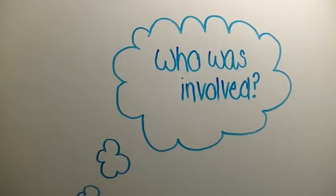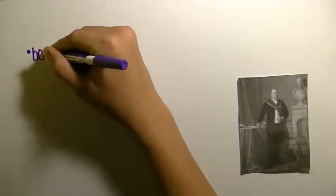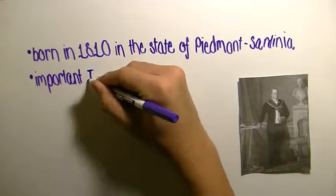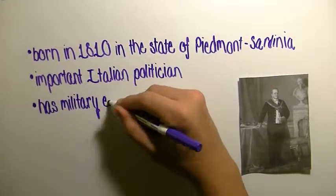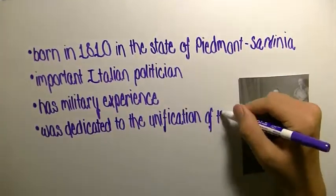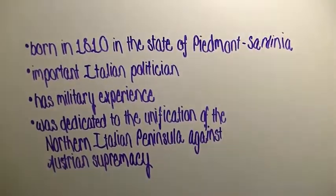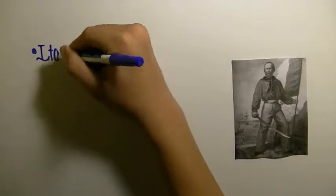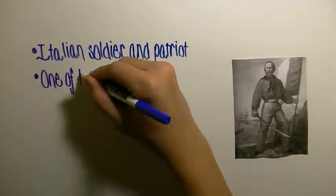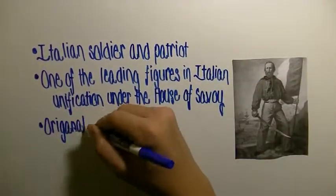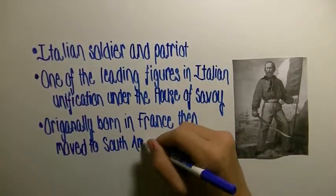You might be thinking: who was involved? The two main people involved in the revolution were Count Camillo de Cavour and Giuseppe Garibaldi. Camillo de Cavour was born in 1810 in the state of Piedmont-Sardinia. Cavour was an advisor for the Kingdom of Sardinia, dedicated to the unification of the northern Italian peninsula against the Austrian supremacy. He accomplished this with the help of Giuseppe Garibaldi. Giuseppe Garibaldi was an Italian soldier and patriot who was one of the main people who helped achieve Italian unification under the House of Savoy. He was originally born in France and then moved to South America in exile.